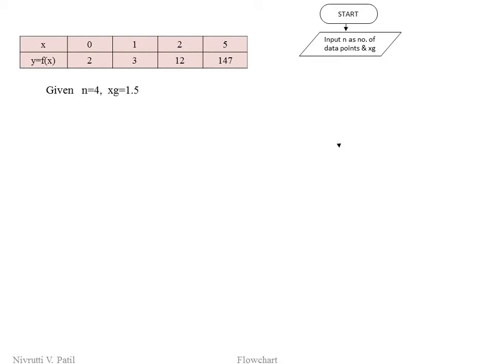Next, we have different x values and different y values given. For n number of values, to get input from the user we need to use a for loop with variable i, taking the loop for i equal to 1 to n. Then we input x(i) values and y(i) values. Note that MATLAB arrays start from index 1, not 0, so i goes from 1 to n.